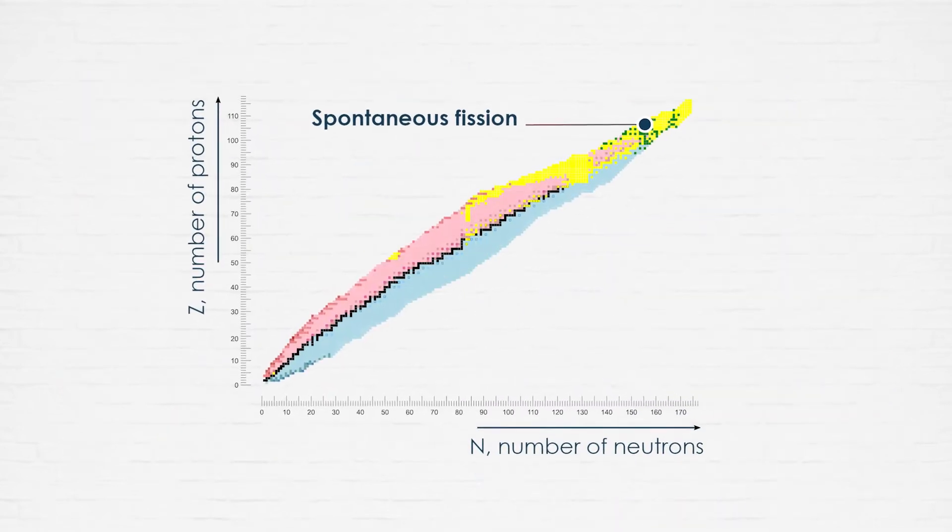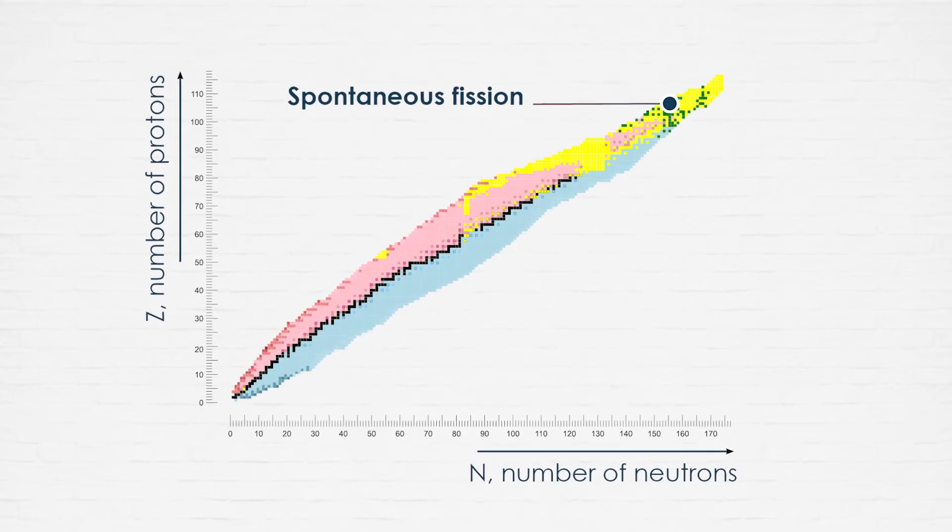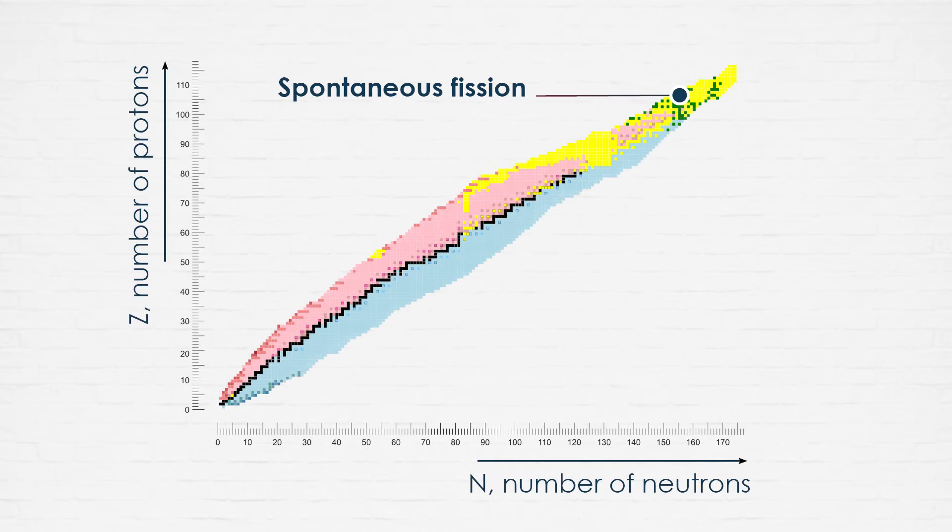Spontaneous fission is a decay process that produces, let's say directly, neutrons. As indicated by green regions in the table of nuclides, the spontaneous fission is typical of some heavy nuclei, as an alternative to other processes.